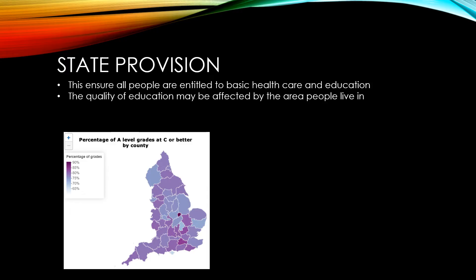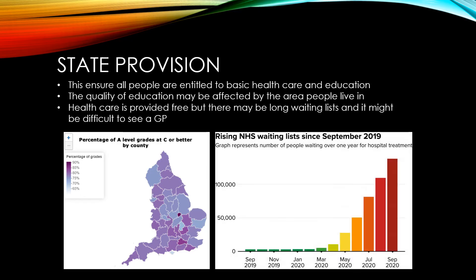While state provision ensures that healthcare is provided for free, there may be long waiting lists and it might be difficult to get in and see a GP. On the other hand, those that are able to afford private medical cover are able to get a much better service than other people, again making a big gap between rich and poor.